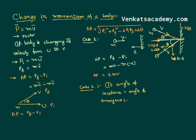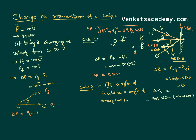Now let us calculate the change in momentum. Along the y-axis: p y final minus p y initial. Initially the vertical component is v sin theta and finally it is also v sin theta, so v sin theta minus v sin theta equals zero — there is no change in momentum along the y-axis. Along the x-axis: initially it is v cos theta and finally it is also v cos theta but in the opposite direction. So the change in momentum is m times v cos theta minus (negative m times v cos theta), and the two negatives become a plus, giving a change in momentum of 2mv cos theta. In this way, we can calculate the change in momentum in different scenarios.